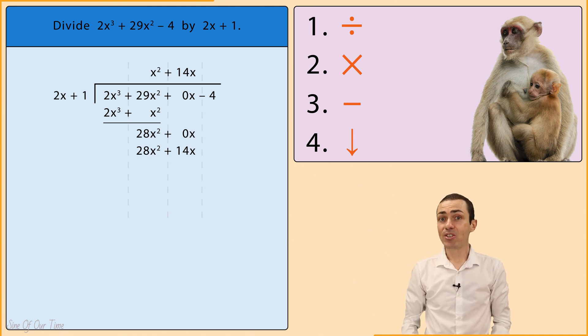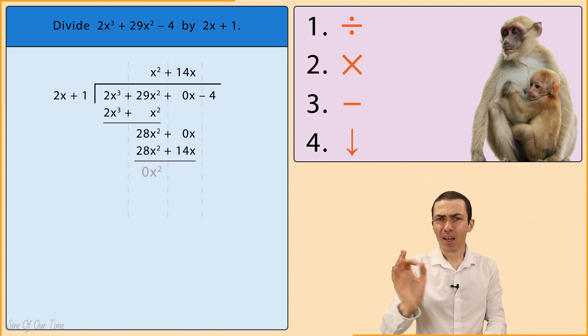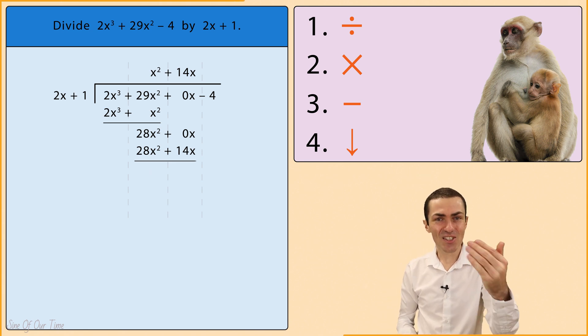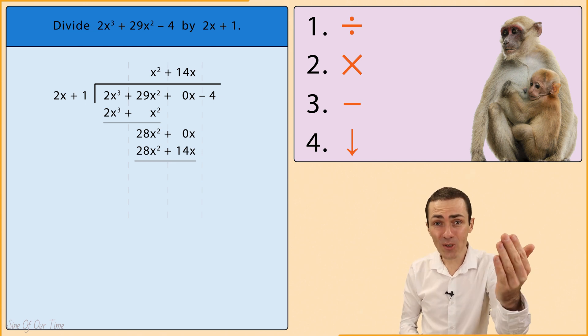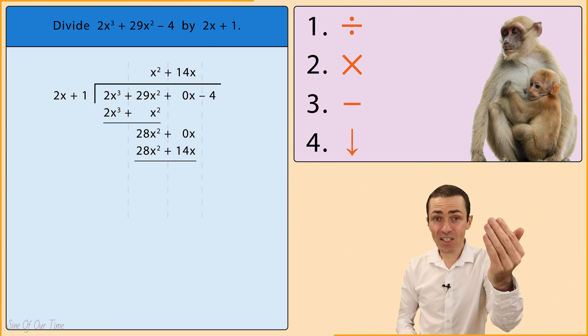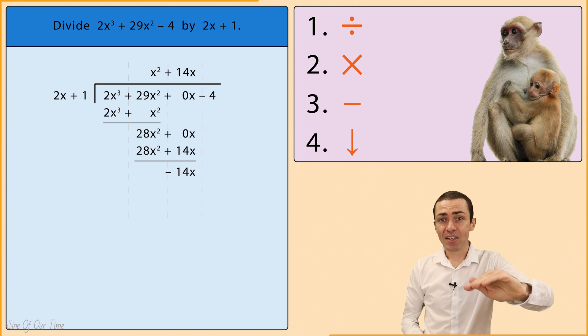And then on to step 3: Subtract. We take 28x squared subtract 28x squared, which gives us 0x squared, but it's not necessary to write that down. And then 0x subtract 14x gives us negative 14x, which we write in a new line.